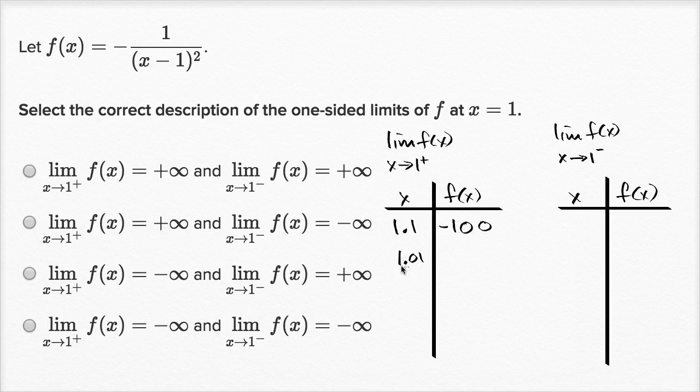If x is 1.01, this is going to be negative one over 1.01 minus one squared. In this denominator, this is 0.01 squared, which is 0.0001, one ten-thousandth. And so the negative one over one ten-thousandth is going to be negative ten-thousand.